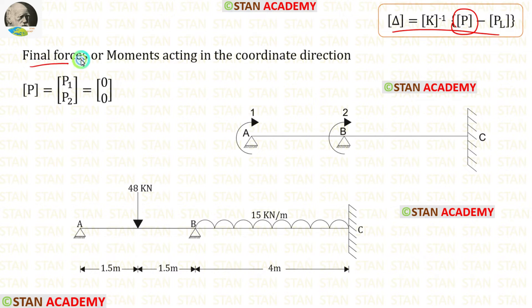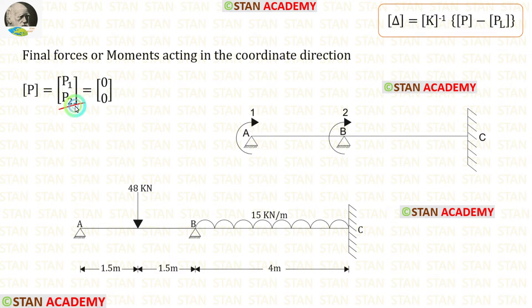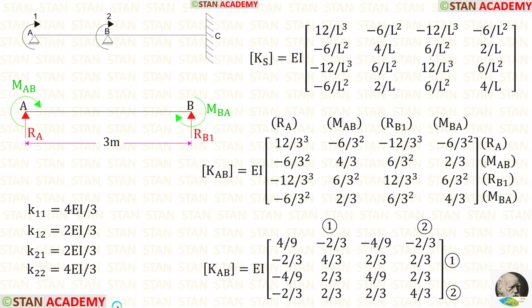Now let us find the P matrix. Inside the P matrix we have the final forces or moments acting in the coordinate directions. For P1, our first coordinate is at point A — there is no applied moment there, so P1 = 0. For P2, our second coordinate is at point B — there is no applied moment there either, so P2 = 0.